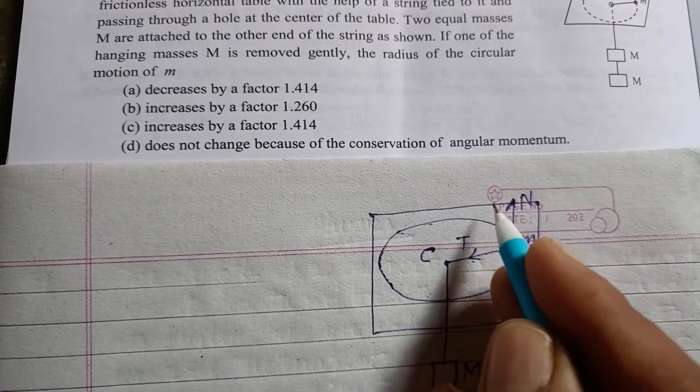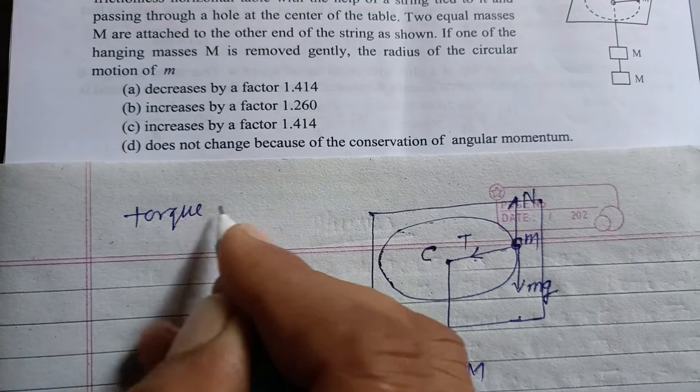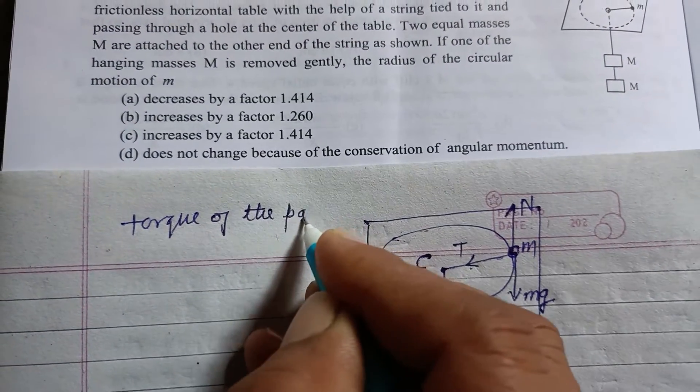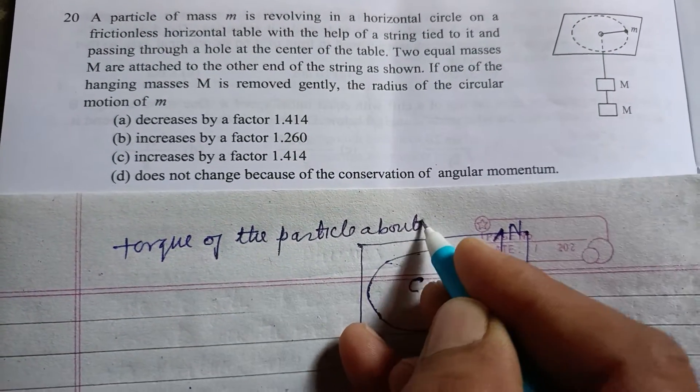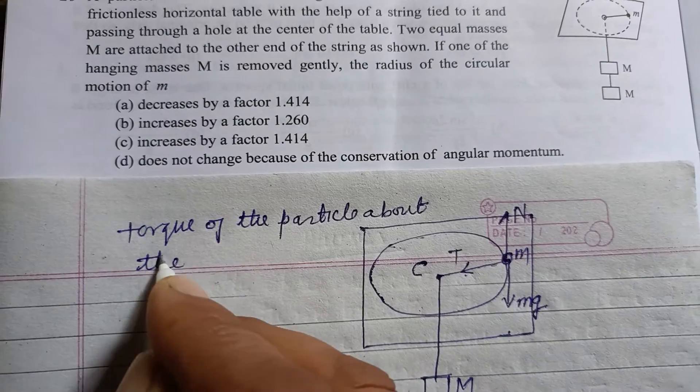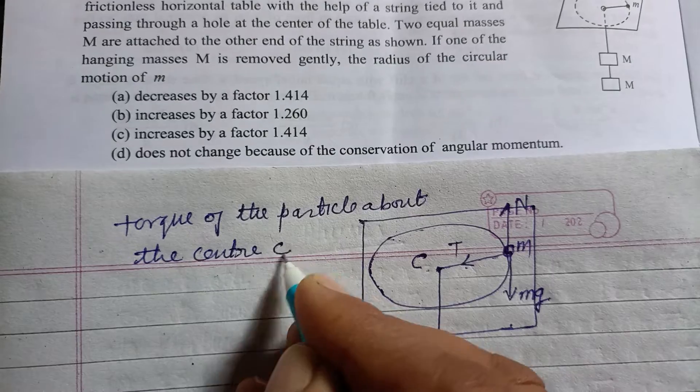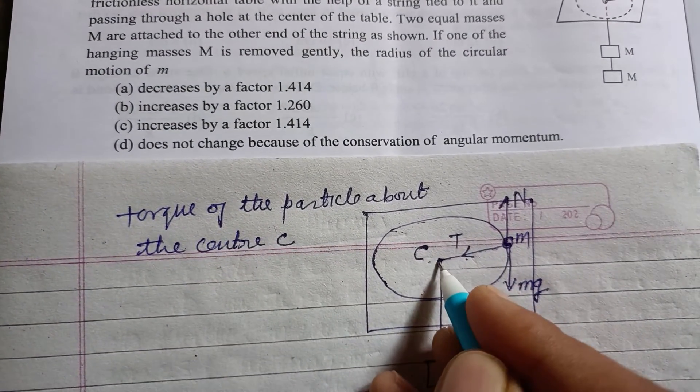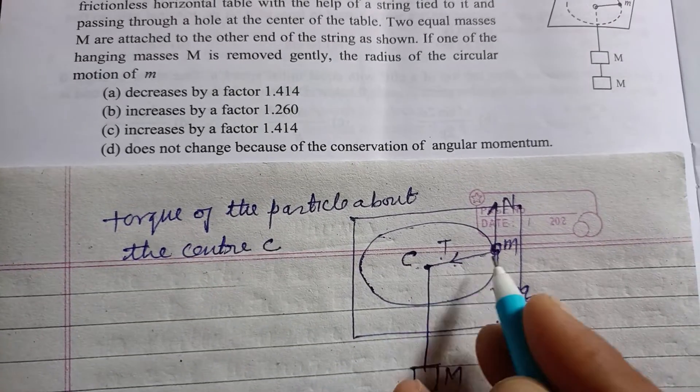First we consider the torque of the particle about the center C. So T is passing through this center, so its torque is zero.